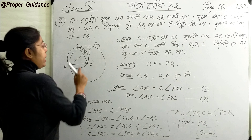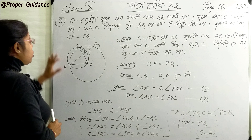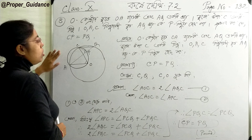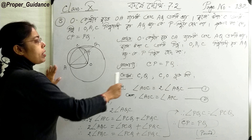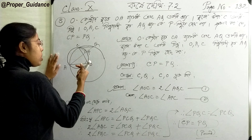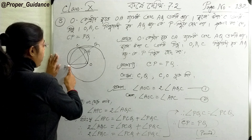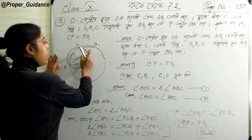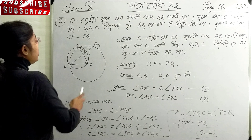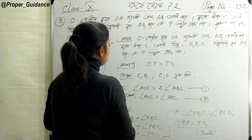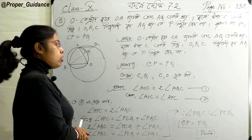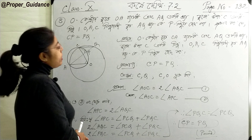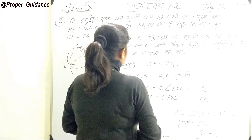It is the first question. A circle is given with center O and point C on the circle. Points A, C are given, and a circle passes through O, A, C. A line AQ cuts the circle at point P — not passing through O, A, C. We need to prove CP equals PQ.